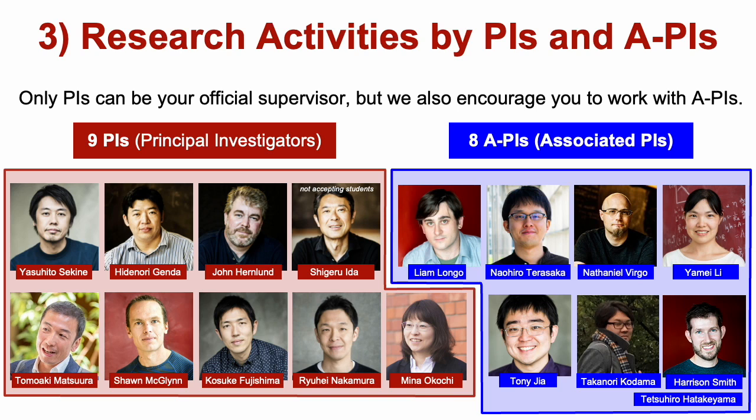Thank you, Ryuhei. Next, we have introductions of research activities by HPI and APIs. In our LC, we have nine PIs — principal investigators — listed on the left side, and eight APIs — associated PIs — listed on the right side. Only PIs can be your official supervisor, but we encourage you to work with APIs as well. Let's start with the Yasuhito Sekine lab.